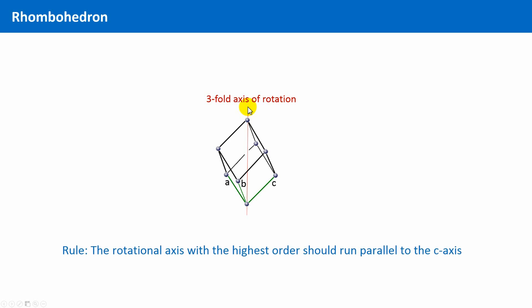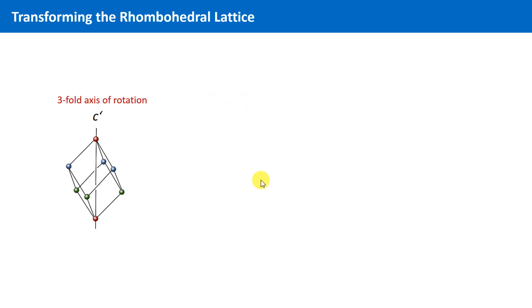And this can be accomplished also for the rhombohedral lattice, if we transform it in the following way. If we take this diagonal as the new c-direction, marked here as c', then the lattice points of the rhombohedron have the following fractional coordinates along this c' direction.